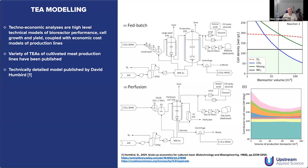A good starting place is techno-economic analysis, or TEA modeling. This is high-level technical modeling of bioreactor performance, cell growth and yield, coupled with economic cost models of the production lines. There's a reasonably well-known 2021 publication by David Humbert showing a fed-batch production line and a perfusion production line. The top-right graph shows the technical modeling of yield — achievable cell density in wet grams per liter as a function of bioreactor volume — with constraints around oxygen, carbon dioxide, and mixing. I'll be focusing on this technical side: predicting yield and cell densities, not getting into the economic and cost side.